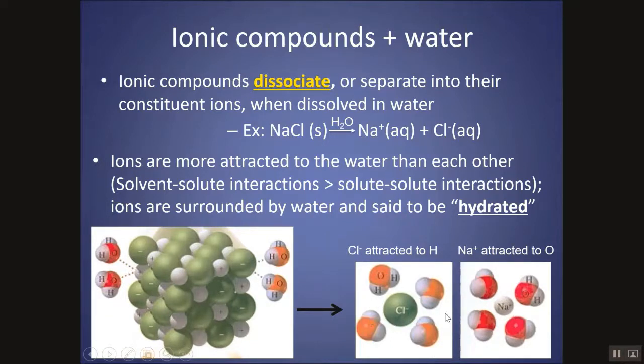The negative ion would be surrounded by waters with the hydrogen oriented toward it because the hydrogen is the partially positive part of the water and opposites attract. The positive ion would have waters oriented toward it with the oxygen side because that's the slightly negative side of the water.